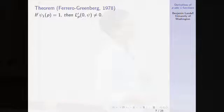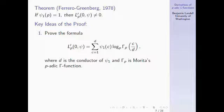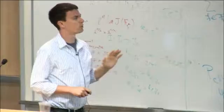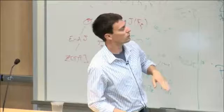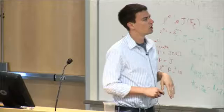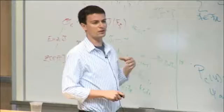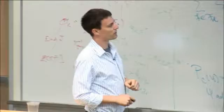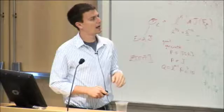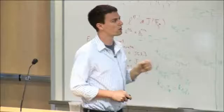I'll quickly go through the proof in about three lines. Ferrero and Greenberg prove a general formula for the derivative at 0 — they don't assume ψ₁(p)=1, but under that assumption it simplifies to a linear combination of p-adic logarithms of a p-adic gamma function, where D is the conductor of ψ₁.